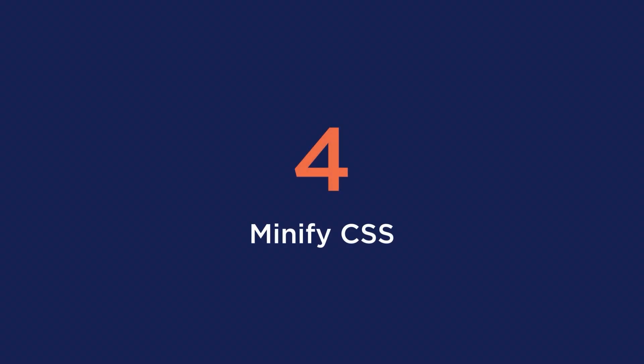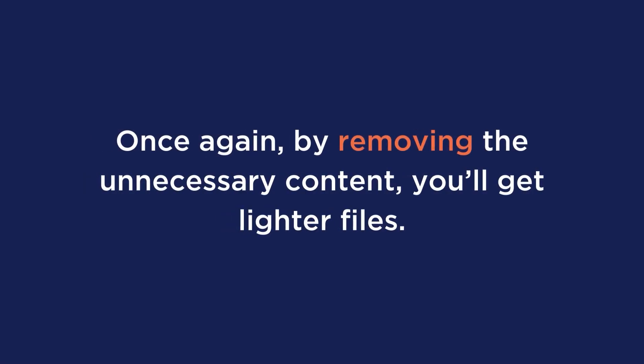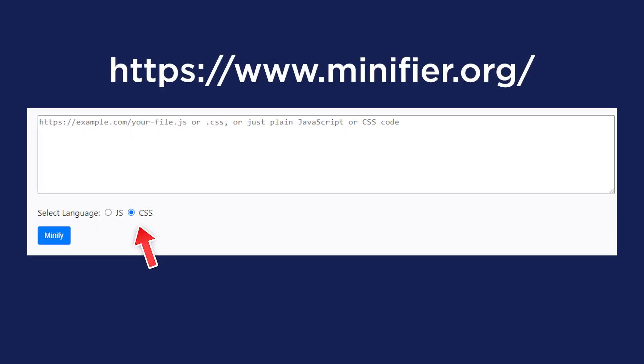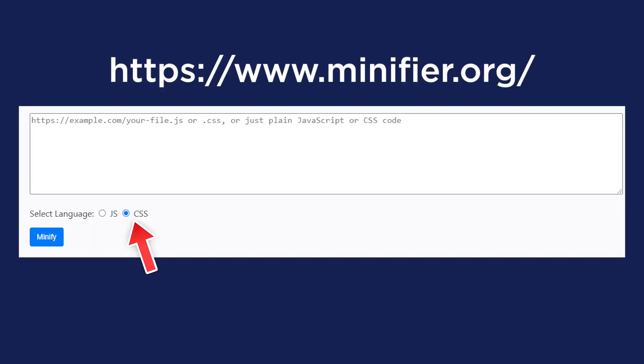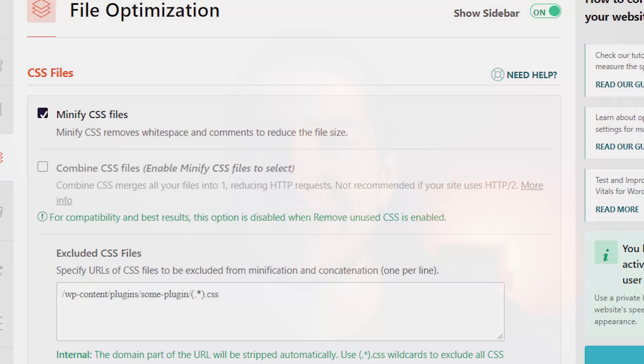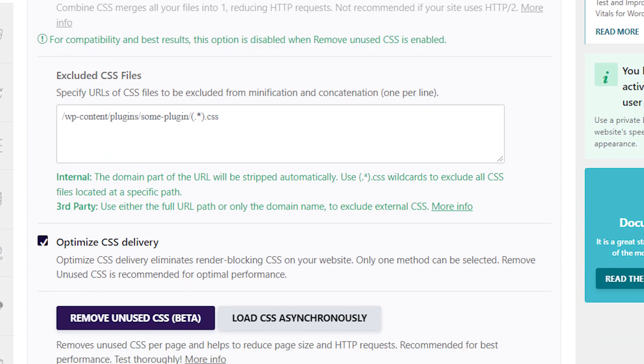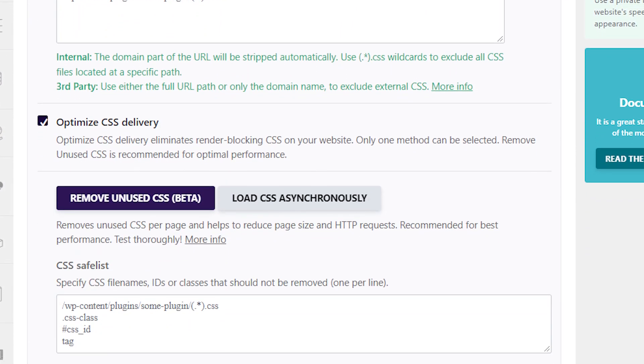Tip number four is to minify CSS. In a CSS file, you will find white space, comments, and punctuation. This content helps the developer read the code better, but it's completely unnecessary for the visitor. By removing this unnecessary content, you'll get lighter files. For CSS, there is a free tool like minifier.org that will help do this for you. And within our plugin WP Rocket, you can clean up and reduce your CSS files within the file optimization tab.